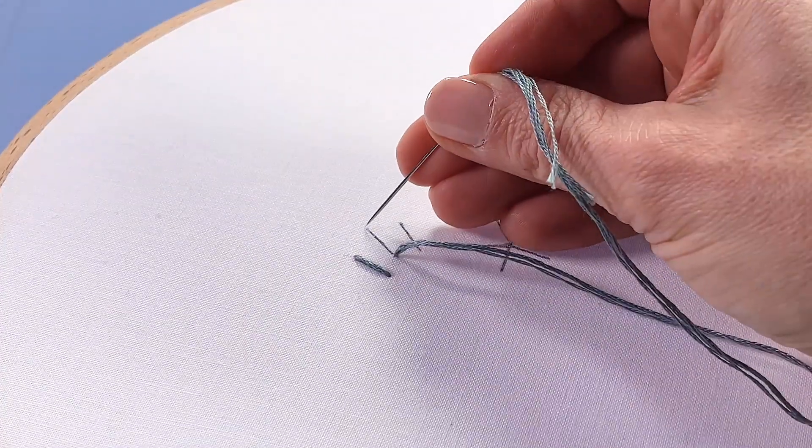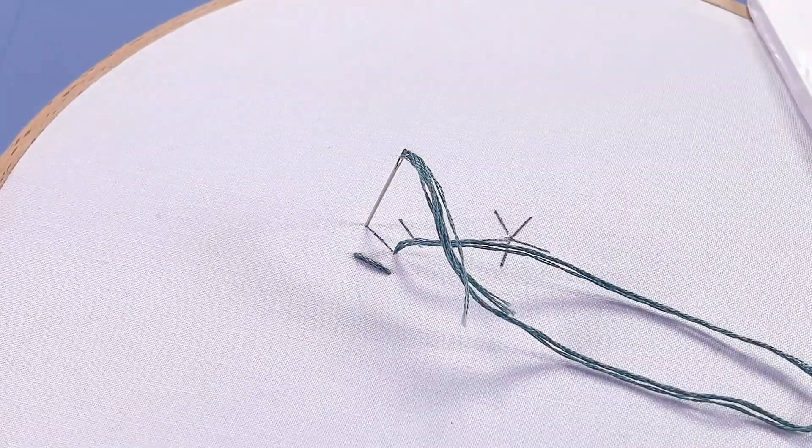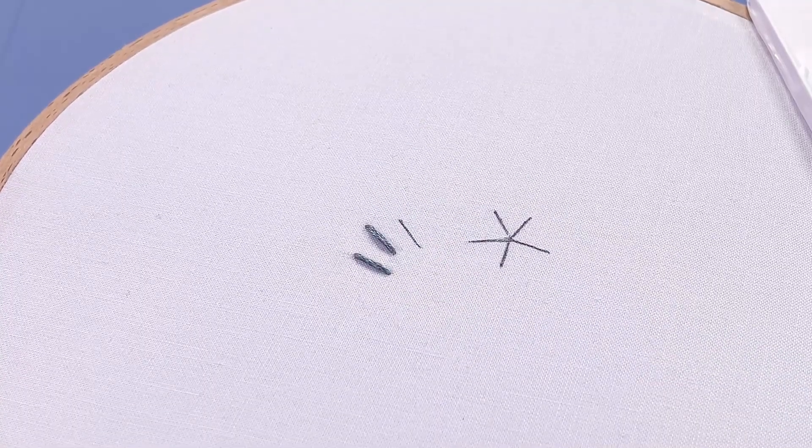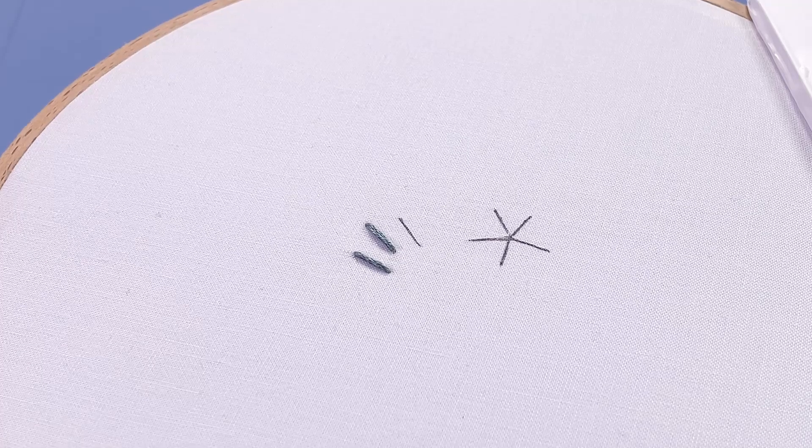And then poke your needle down at the other end of your second stitch. Gently draw through all the working thread to the back and hey, now you've made two straight stitches.